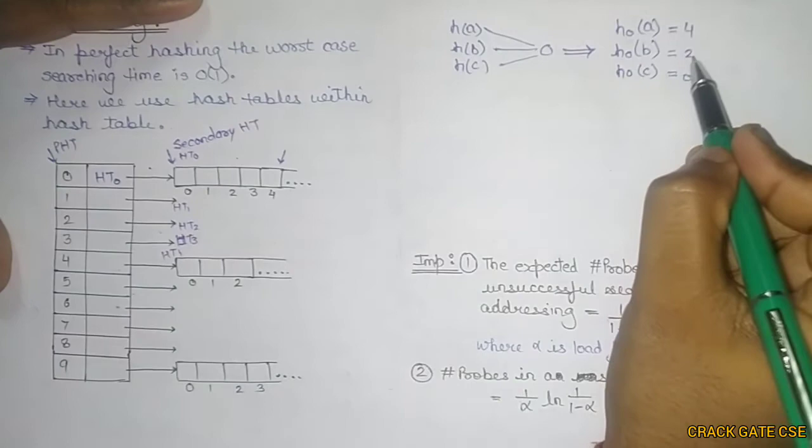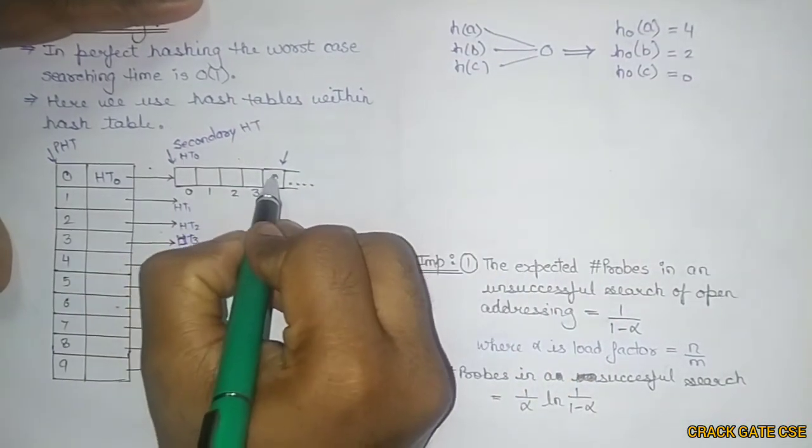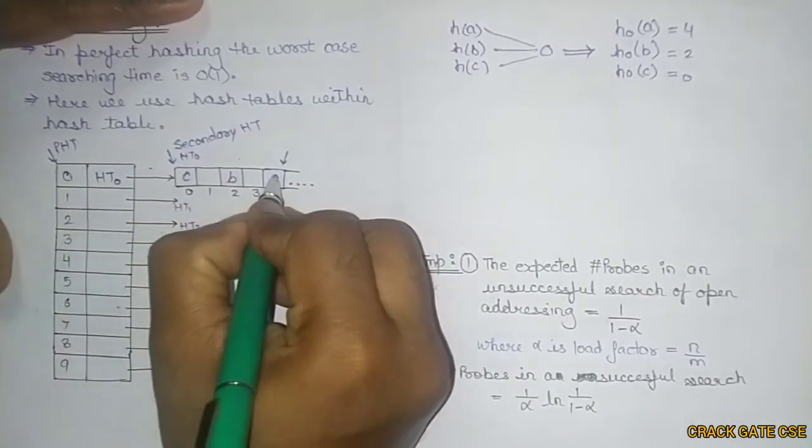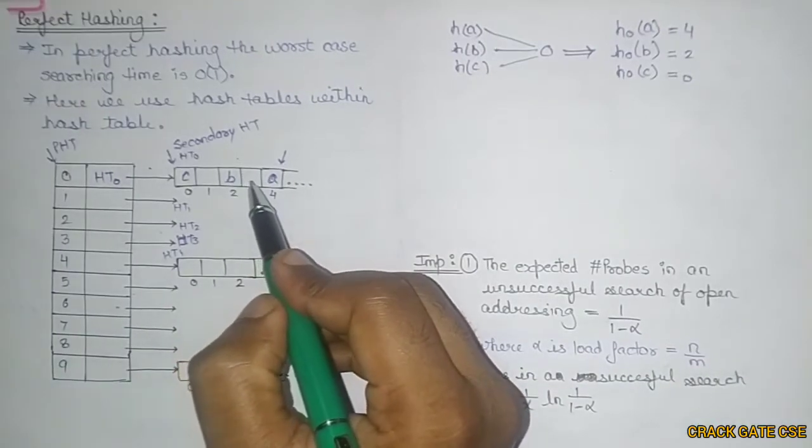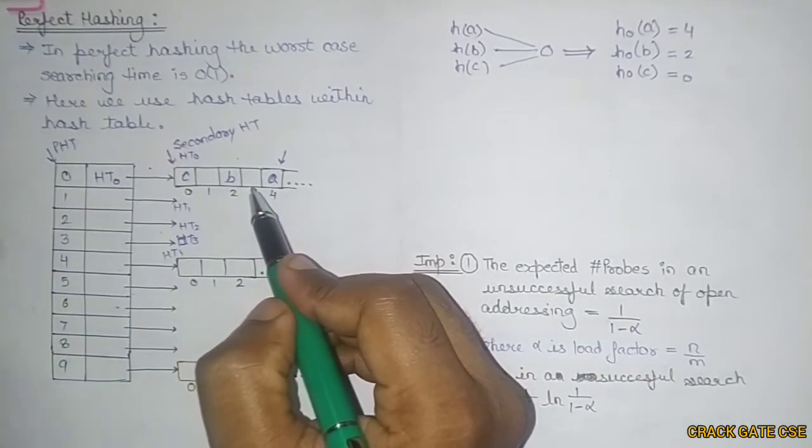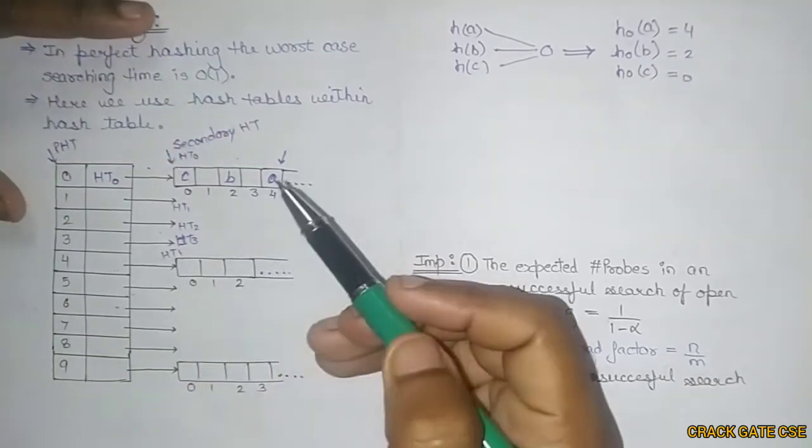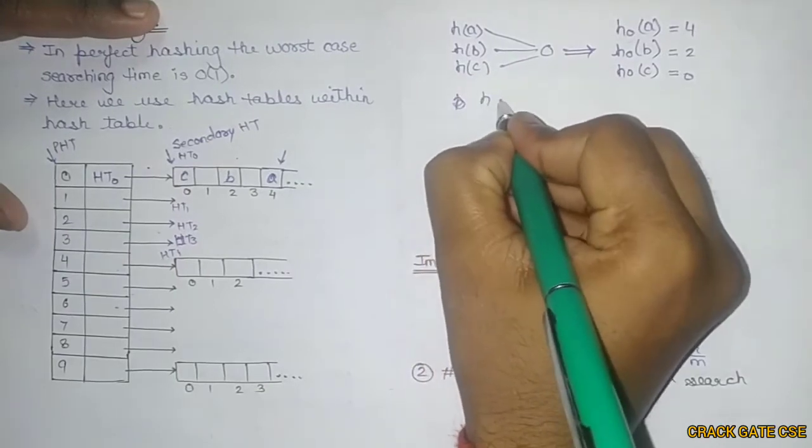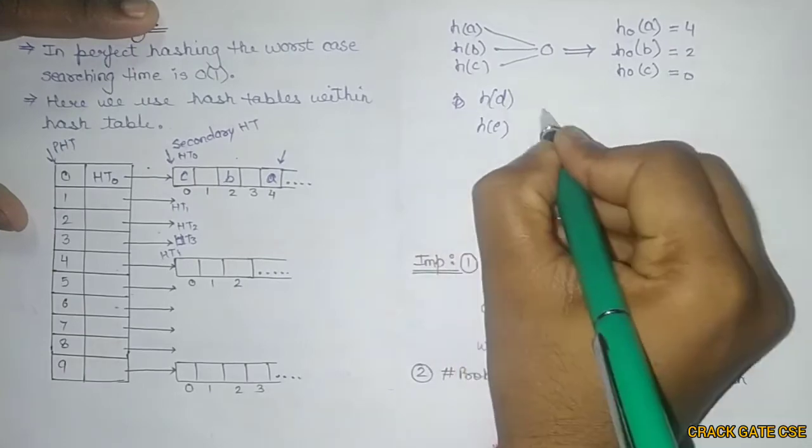If this is 4, this is 2, this is 0, that means A will be mapped to the 4th place, B will be mapped to the 2nd place, and C will be mapped to the 0th place. There's a possibility that some probing technique like linear probing, quadratic probing, or double hashing is used inside this secondary hash table. Similarly, let's see there are some more key values like D and E.